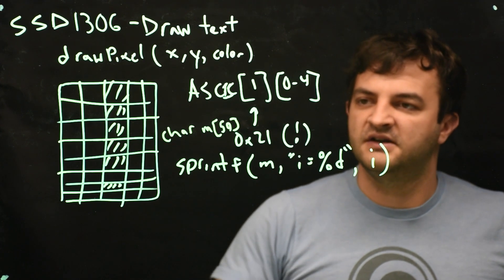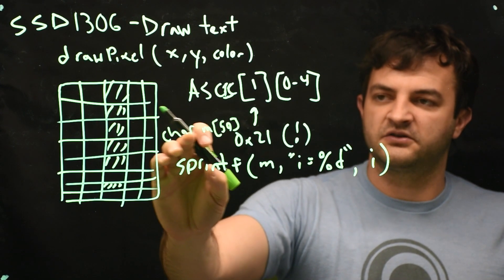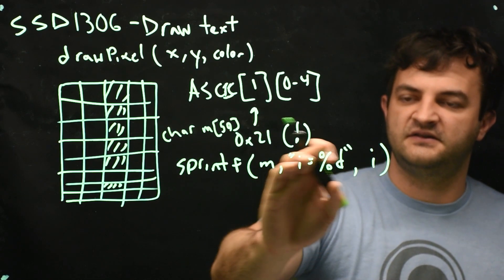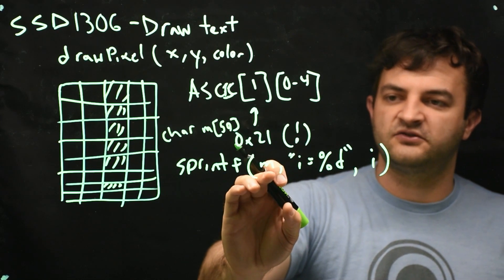So we've got a message, a character array called m with 50 possible values in it. Sprintf will now turn this into a character array and store it into m.